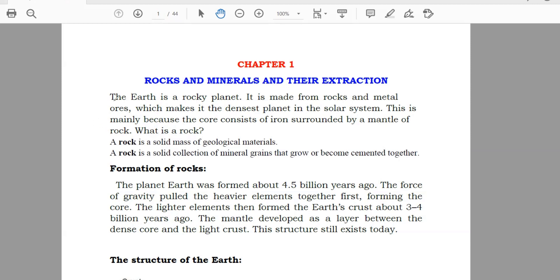As introduction, the earth is a rocky planet. It is made of rocks and metal ores. You know the chemistry, as a chemistry student you know the ore. Ore means a rock which contain any metal inside in the form of compound, like ore of aluminium is bauxite, ore of iron is hematite. Which makes the densest planet in the solar system. They are saying if you talk about the density, the earth is our most dense planet on the solar system. Now, here's some definition.